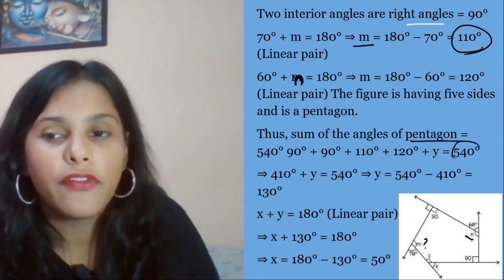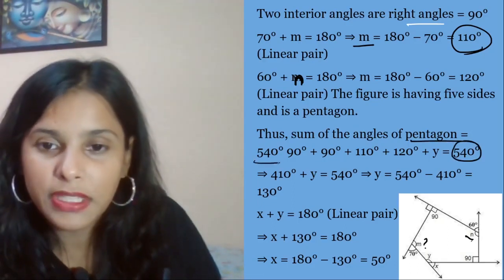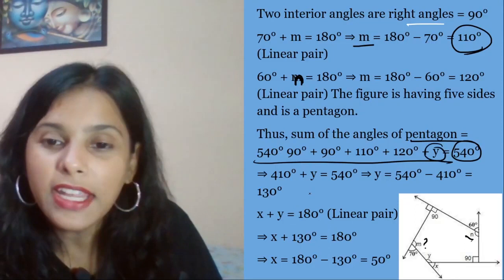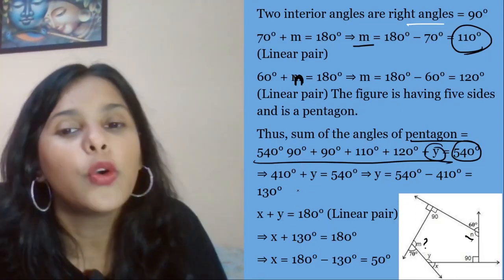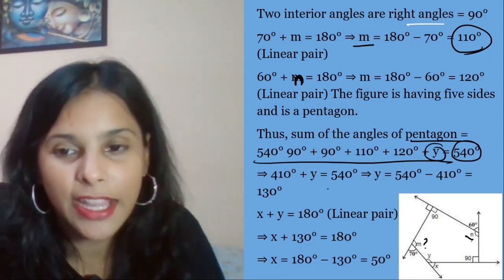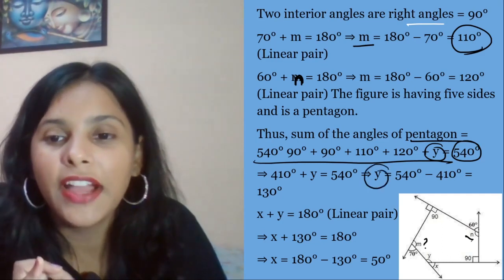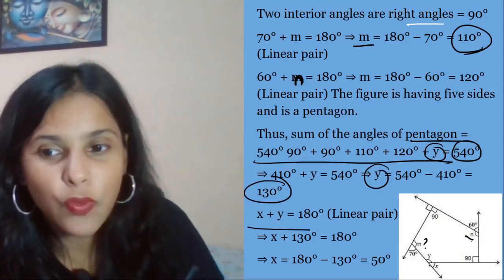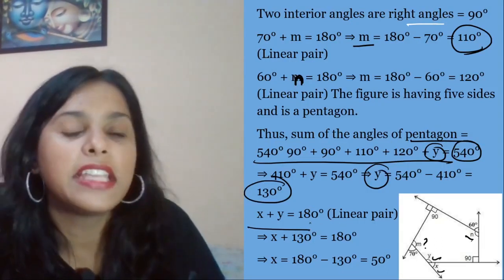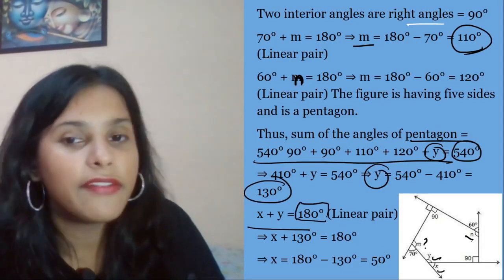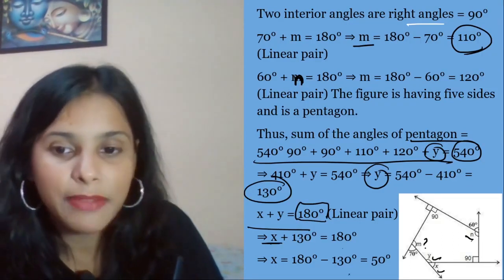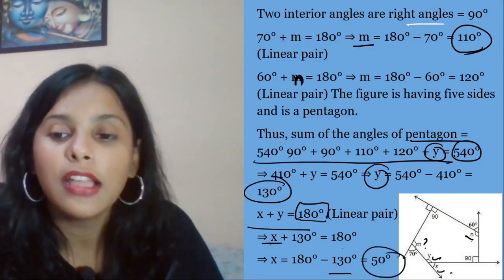We know that pentagon sum is 540. So we will find y's value first. Y's value is 130. Now we will use the linear pair: x plus y equals 180, so x is 180 minus 130, which is 50 degrees.